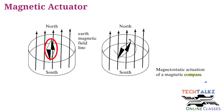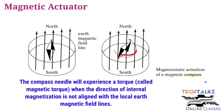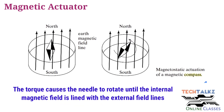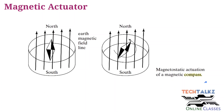The compass needle is a permanent magnet — it is a hard ferromagnetic material. It has an internal magnetic field. When the external magnetic field is not aligned, there will be force or torque components. The external magnetic field in this case is the Earth's geomagnetic field. The compass needle will experience a torque when the direction of internal magnetization is not aligned with the local Earth magnetic field. Due to this torque, the needle will rotate until the internal magnetic field is aligned with the external magnetic field lines. That is why the compass needle aligns with the Earth's field in any direction.